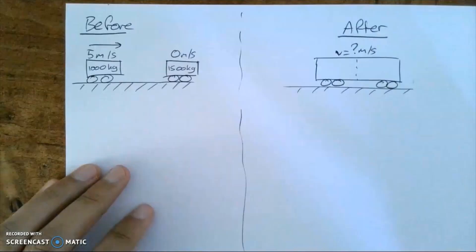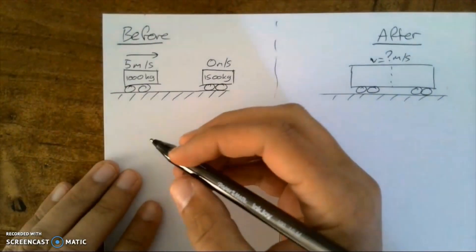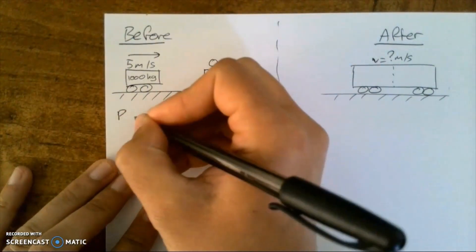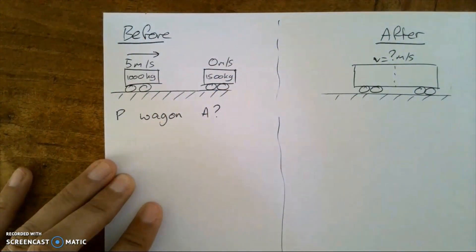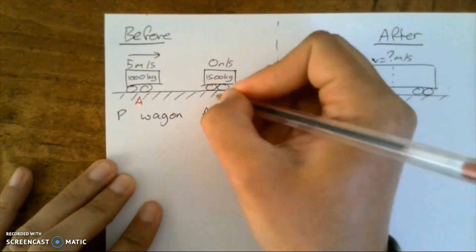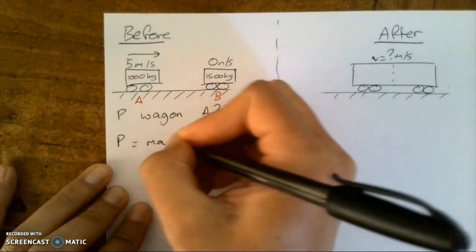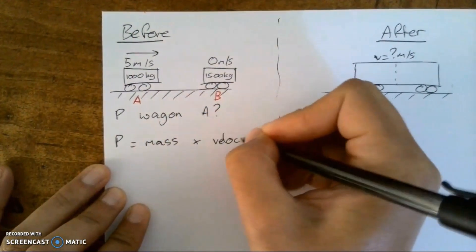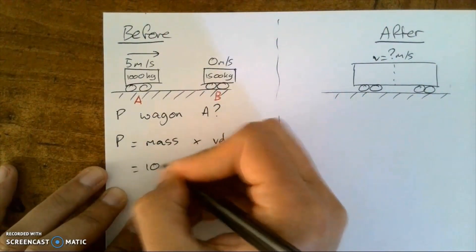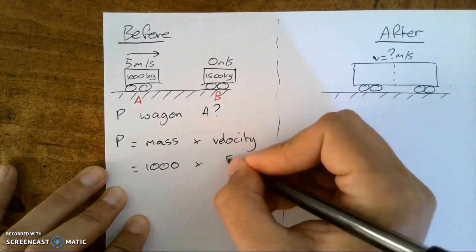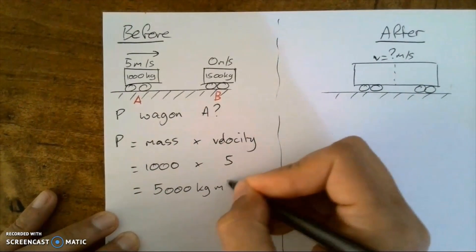I already have certain things drawn out to save time — I would normally draw these along with the class in the lesson. The first question asks us to work out the momentum of wagon A. Normally I ask a student, what's our equation for momentum? And they should tell me that momentum equals mass times velocity. What's our mass? Well, in the question, mass is 1,000 for trolley A and our velocity is 5, therefore the total momentum of trolley A is 5,000 kilograms metres per second.